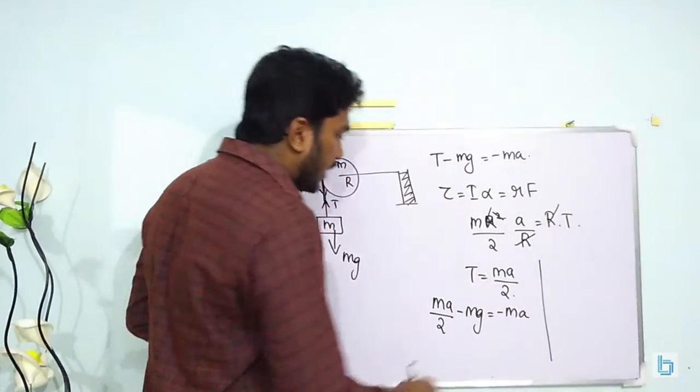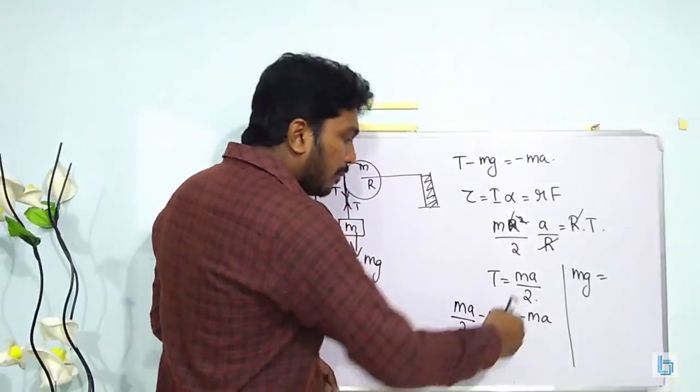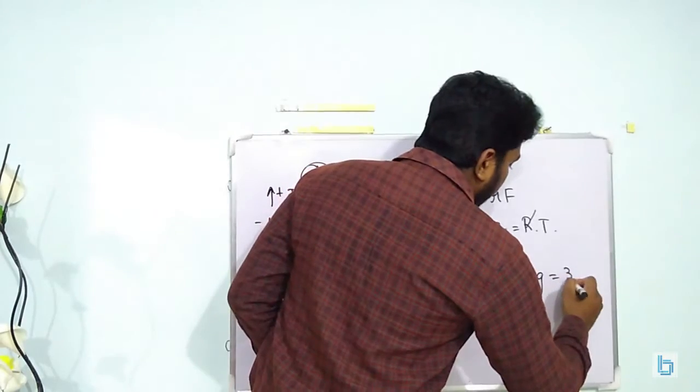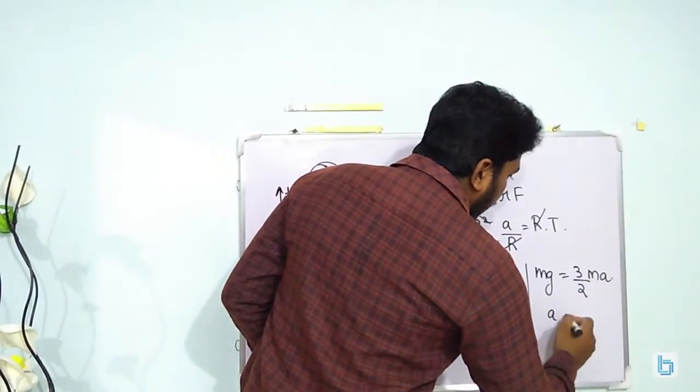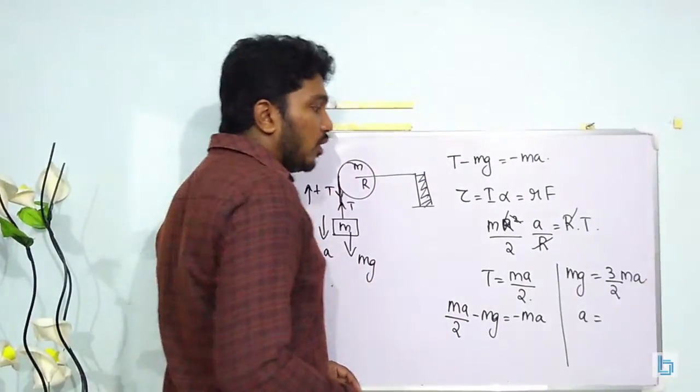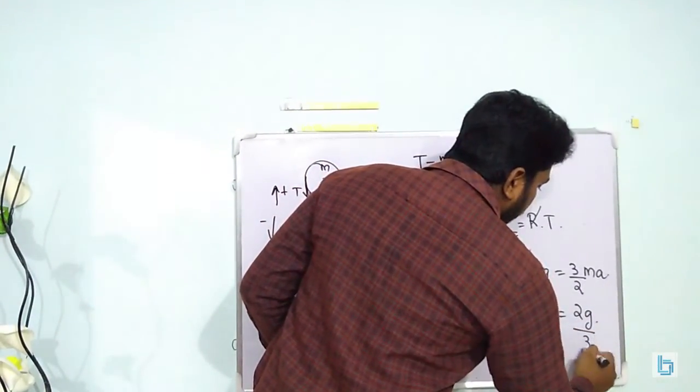Based on our rearrangement, we can write M G is equal to MA by 2 plus MA or that will be 3 by 2 MA or A will be equal to 2G divided by 3.